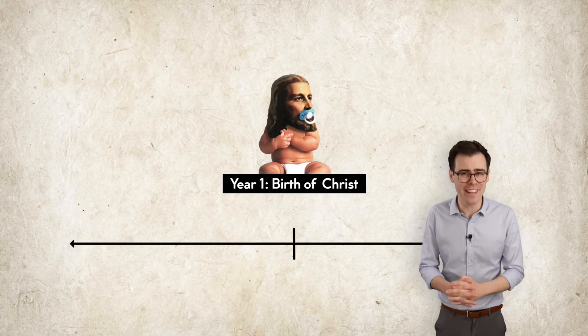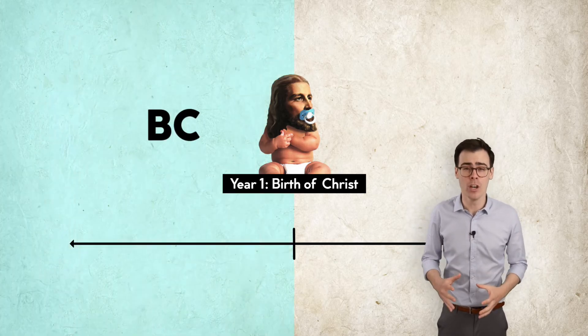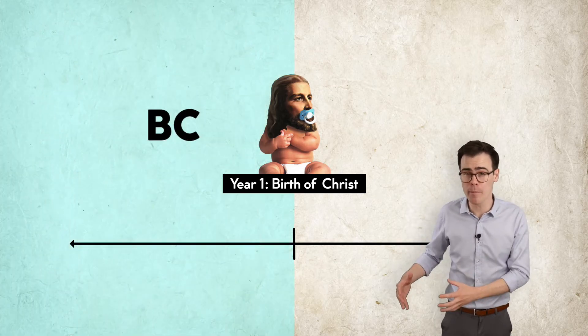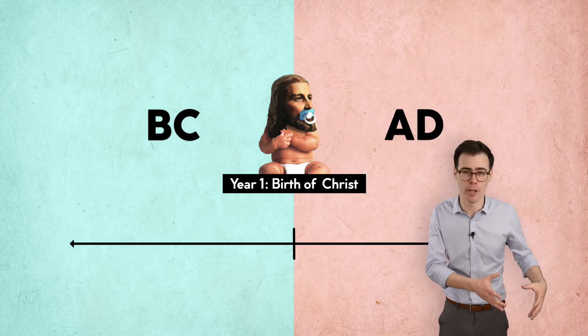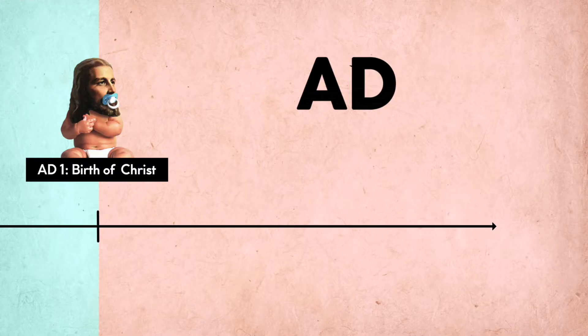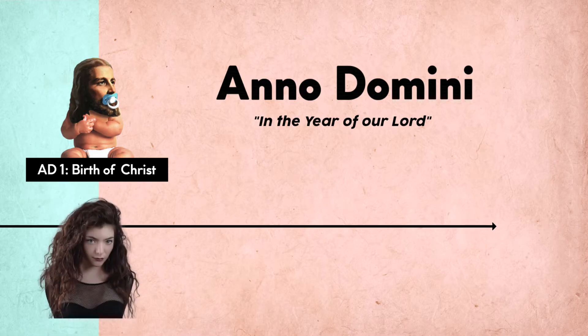And the second thing is that history is divided into two parts. There's BC, which is the part of history before the birth of Christ, and AD, which is the part of history after the birth of Christ. We'll start with AD because that's easier to explain. AD stands for Anno Domini, which is Latin for in the year of our Lord. Lord in this case meaning Jesus Christ.